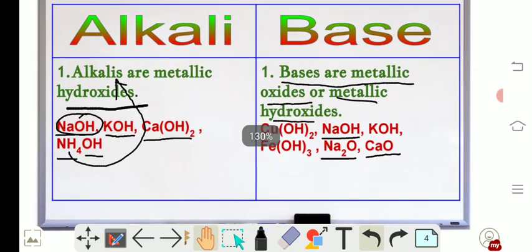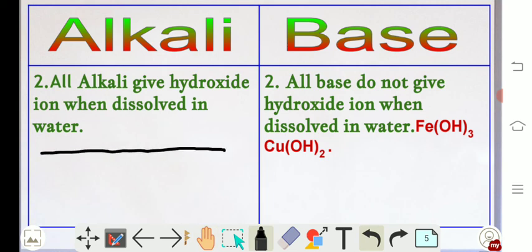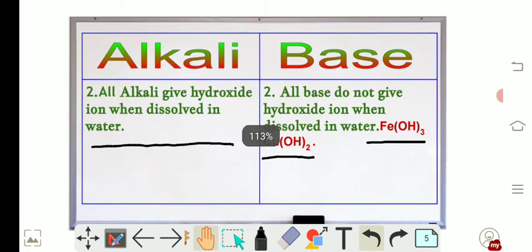The second difference: all alkalis give hydroxide ions when dissolved in water. However, all bases do not give hydroxide ions when dissolved in water. For example, ferric hydroxide Fe(OH)₃ and cupric hydroxide Cu(OH)₂ do not give hydroxide ions when dissolved in water. But some bases like sodium hydroxide and potassium hydroxide do give hydroxide ions when dissolved in water.